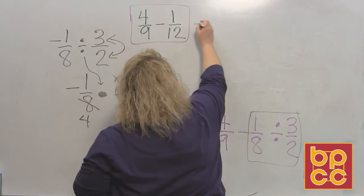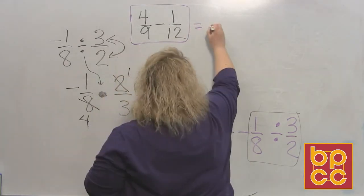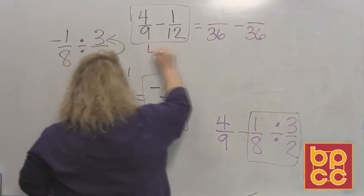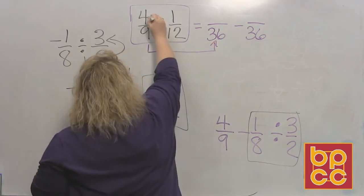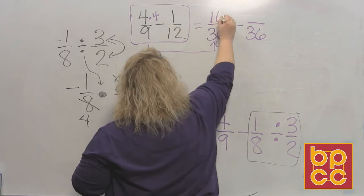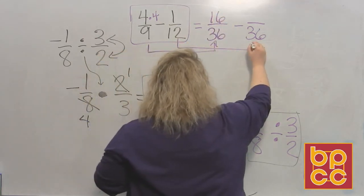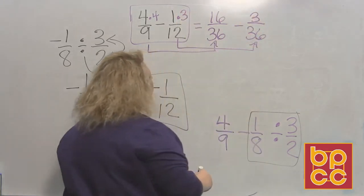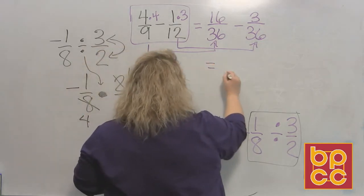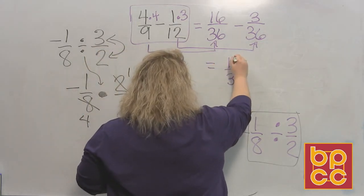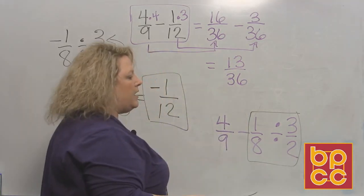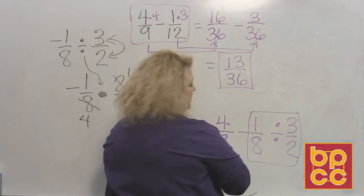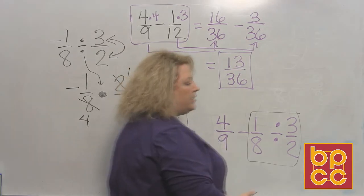My common denominator between 9 and 12 is 36. And I changed from a 9 to a 36 by multiplying by 4, so I do the top times 4. So 4 times 4 would make 16. I went from a 12 to a 36 by multiplying by 3, so that would be 1 times 3, which would be 3. And now I just write the bottom, collect the top, reduce the fraction if you can. And if you can't, then you stop. And 13 is a prime number, but it does not go into 36 an even number of times. So that is all we can do with that.